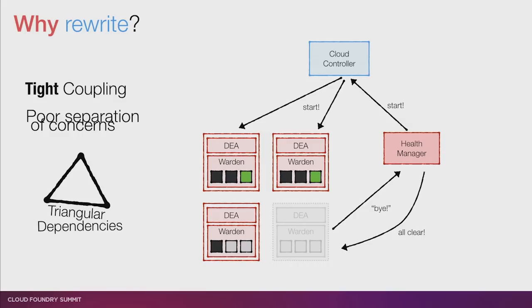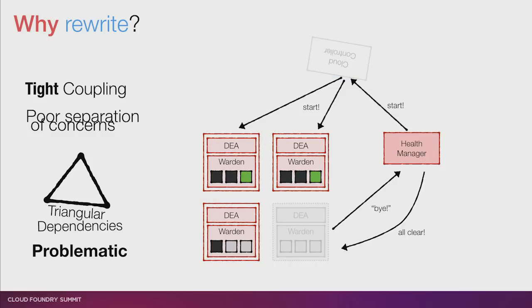What's wrong with this triangle? Well, if a developer wants to add a feature to the DEA, they have to think carefully about how it will affect the Cloud Controller and the Health Manager — whether it will break the implicit interdependencies. And more concretely, if you're doing a rolling deploy and the Cloud Controller falls asleep and a message goes off to space, the start never gets sent, the apps never start, and everyone's unhappy.